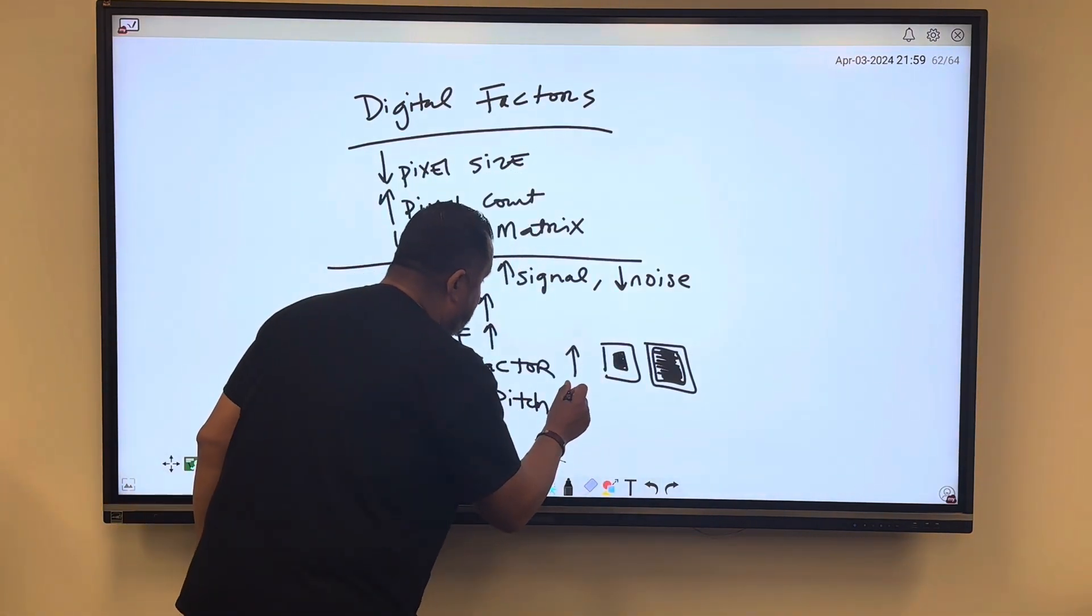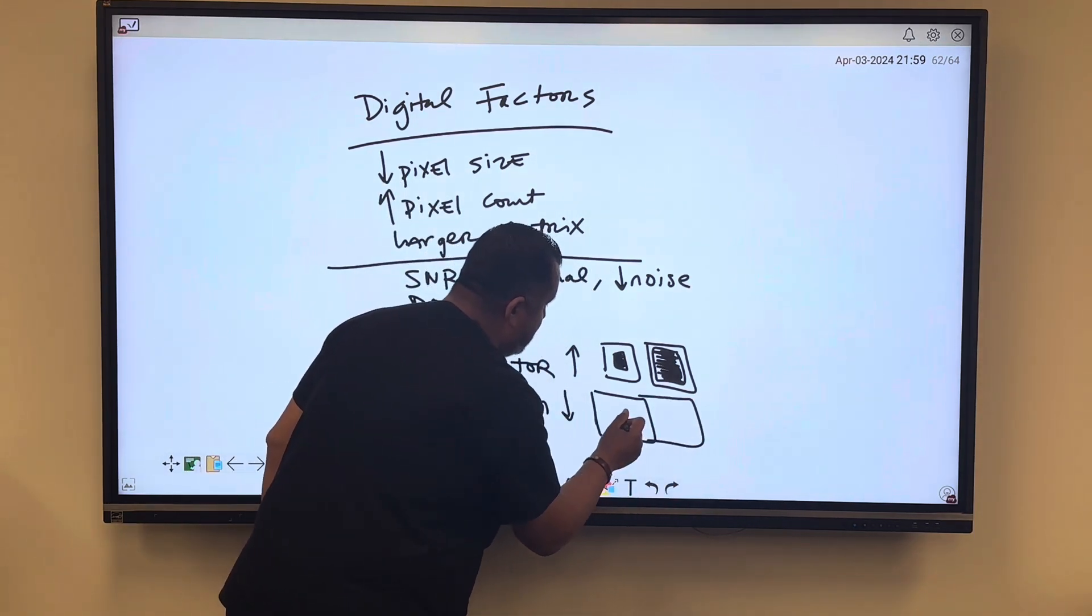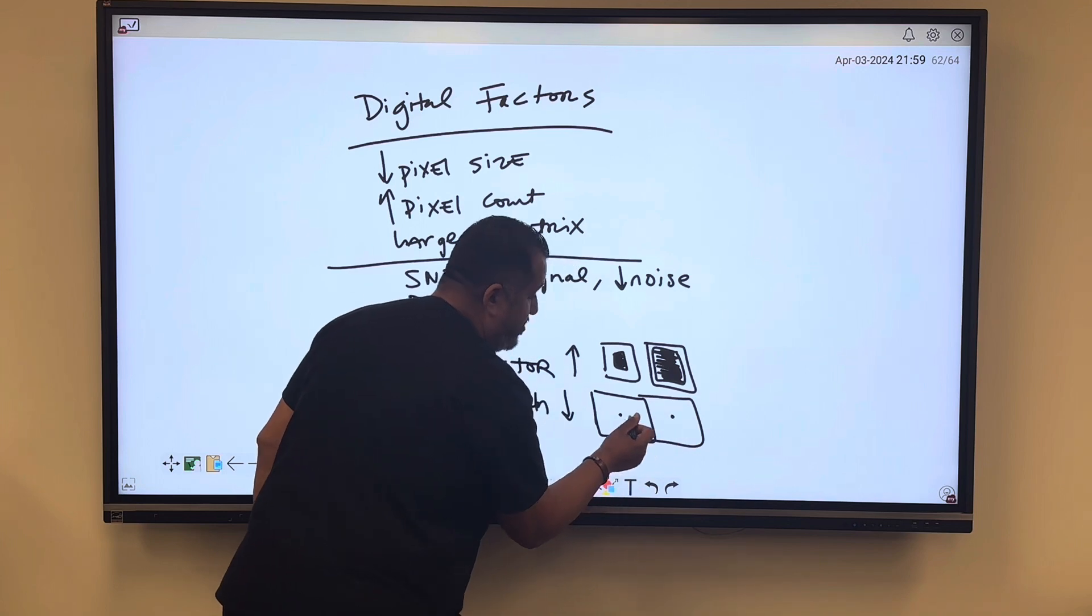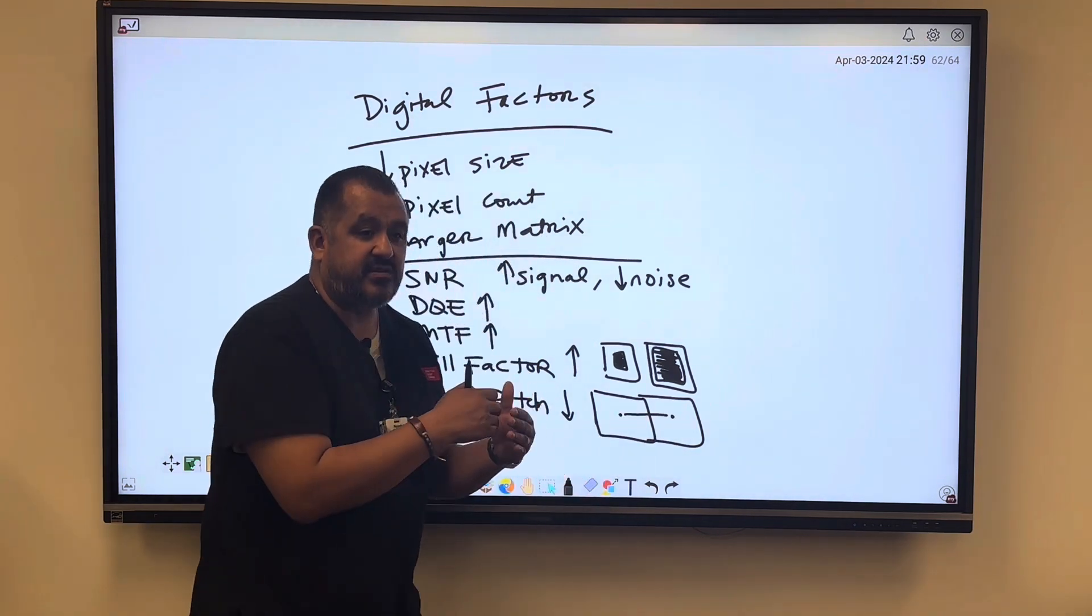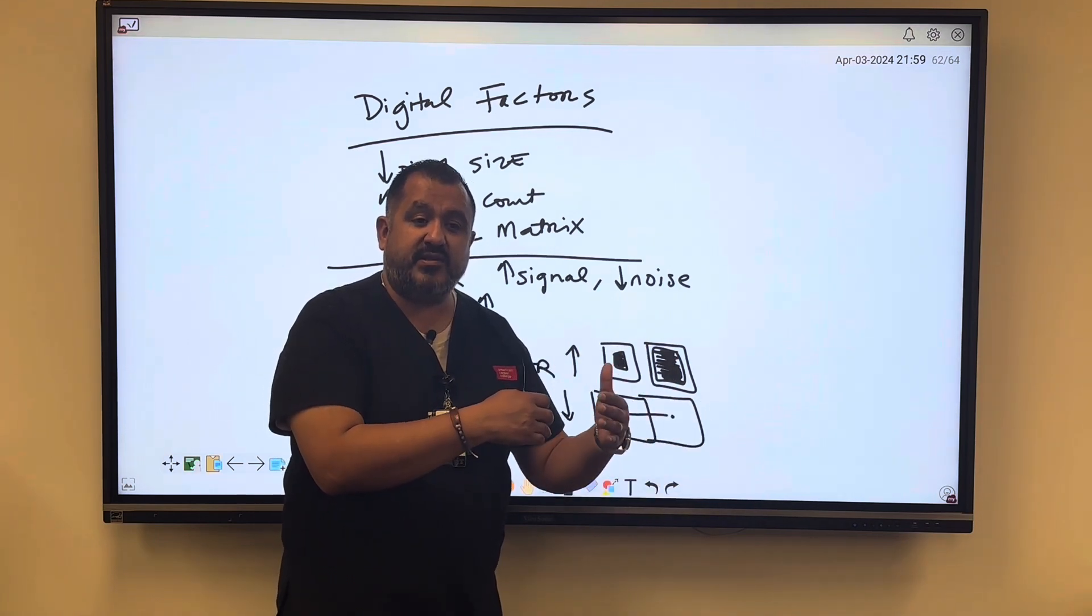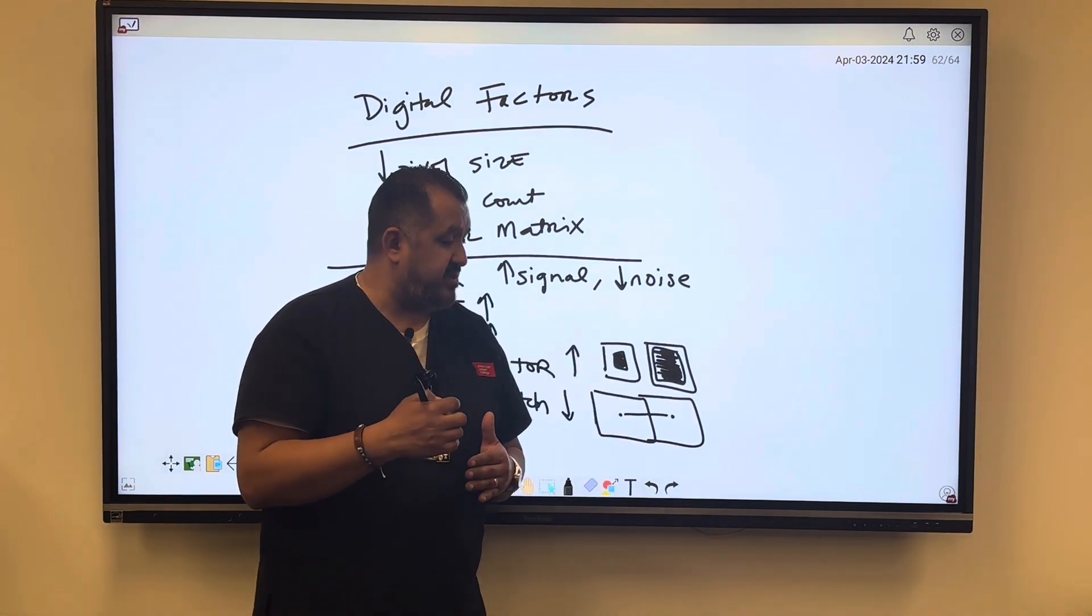So what you want is you want to have a decrease in pixel pitch. And again, what that means is you have one pixel to the next, it's the center from one pixel to the next. You want to make sure that that distance from the next pixel over is going to be a decrease so that signal is not going to be lost.